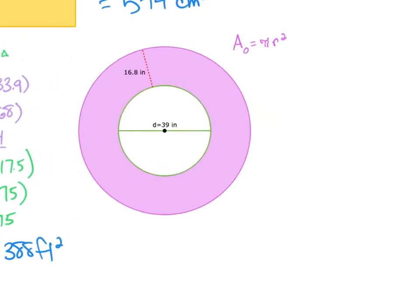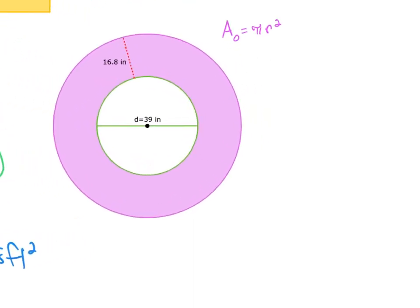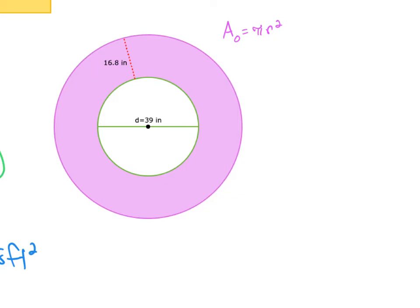This one, well they're not giving us any radius. And so we have to figure out radius. And I'm given diameter, and so half my diameter here is going to be radius. So if I take half of 39, I get 19.5, and that's inches.